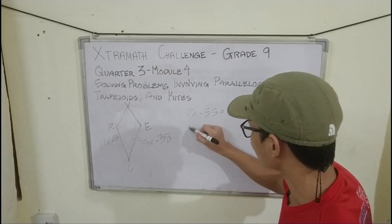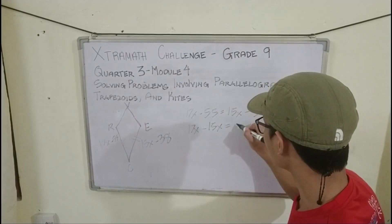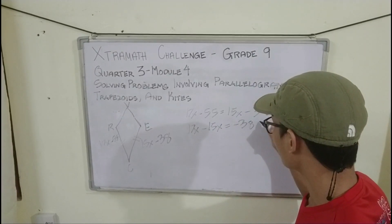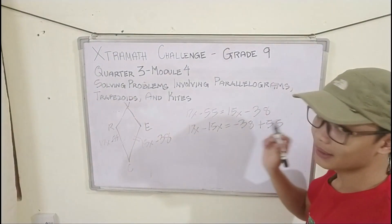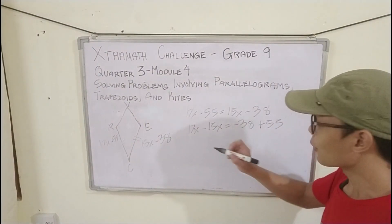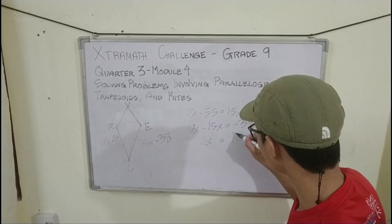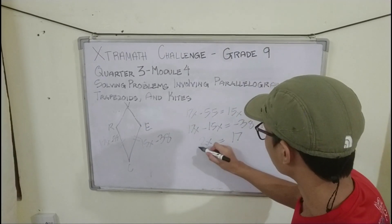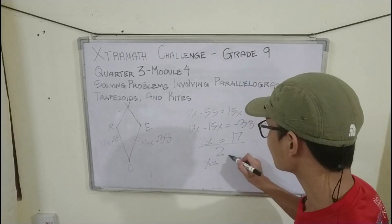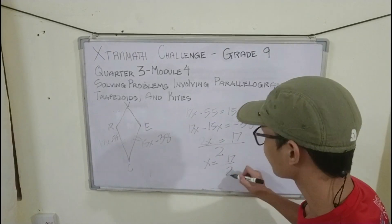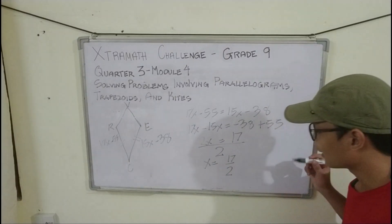By transposition: 17x − 15x = −38 + 55. Combining like terms: 2x = 17. Dividing both sides by 2, we get x = 17/2.